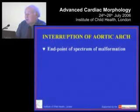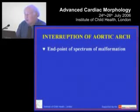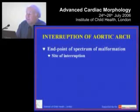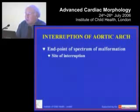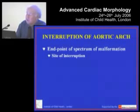We can draw a direct line from aortic coarctation to interruption of the aortic arch, because when we look at autopsy specimens, we can see a spectrum of malformation. That spectrum leads through coarctation to atresia of the aortic arch to interruption of the aortic arch. This spectrum is best seen at the isthmus, but we can also see it in the transverse arch when there is origin of the subclavian artery beyond the site of interruption.